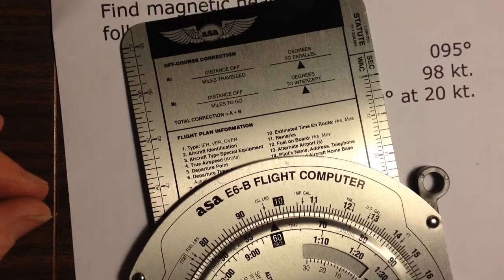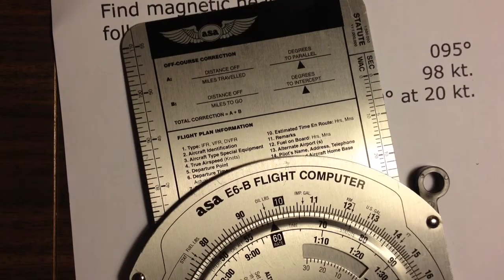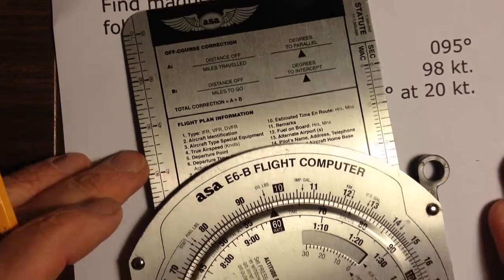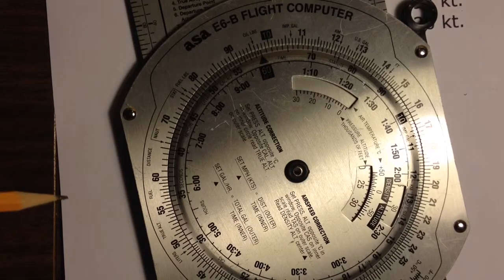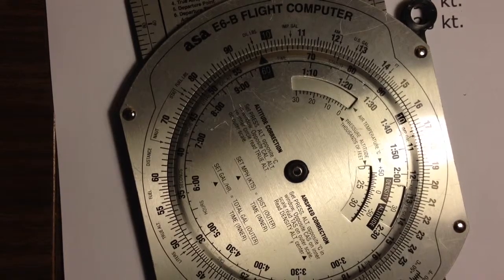This is an E6B manual flight computer, also called a circular slide rule. It was invented in the early part of the last century to help pilots do calculations both in planning their flights and to do corrections while they're in flight.